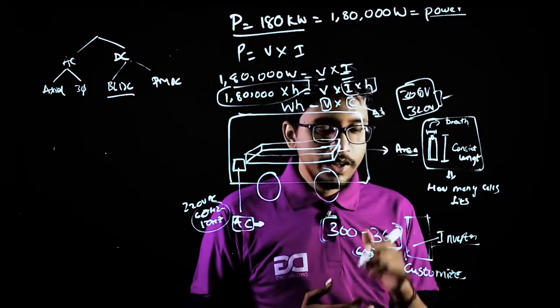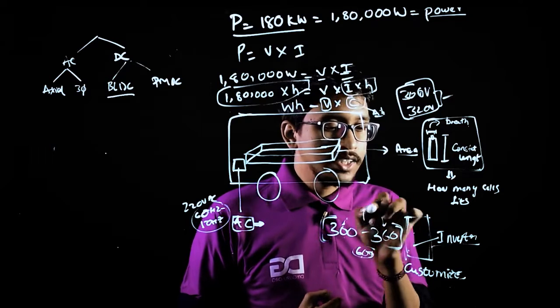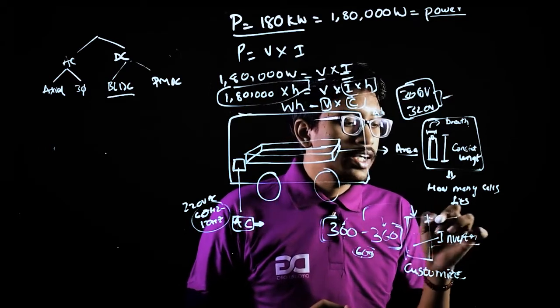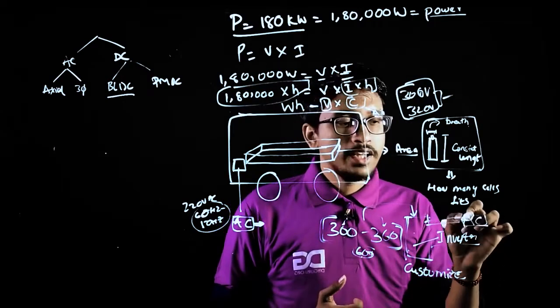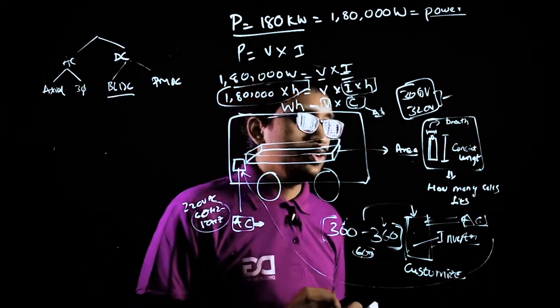So we have to customize the inverter and from this 300 to 360, if you send the DC power to this inverter, it continuously converts into some constant AC power. And that AC power you will be providing to this AC motor. So voltage is not an issue always.